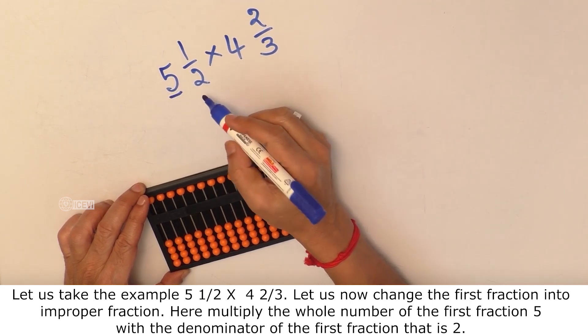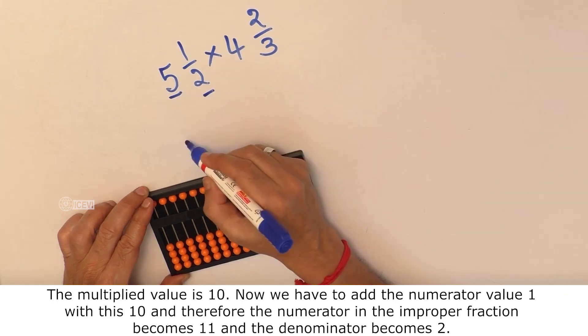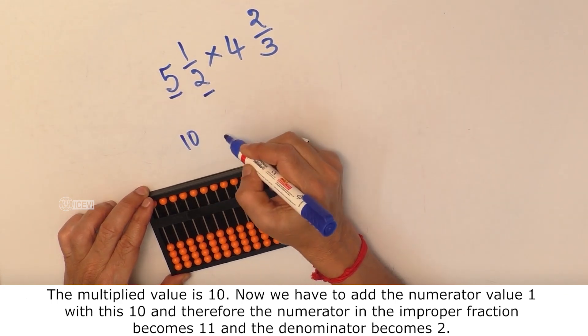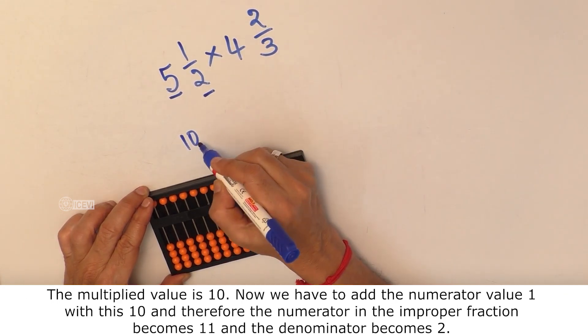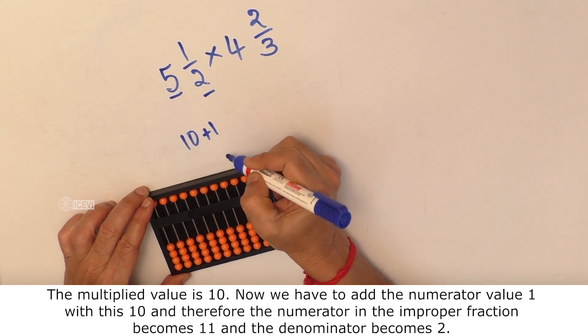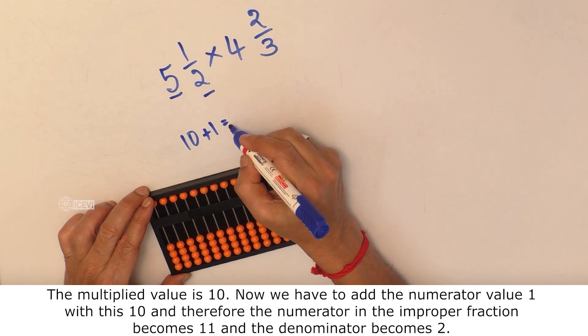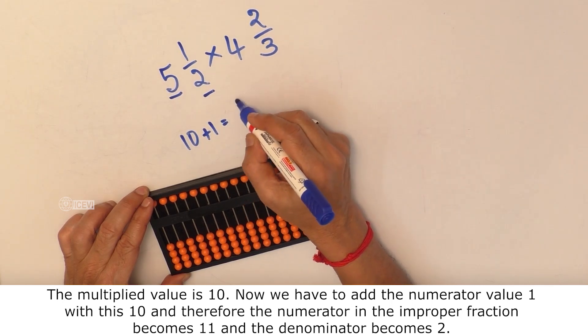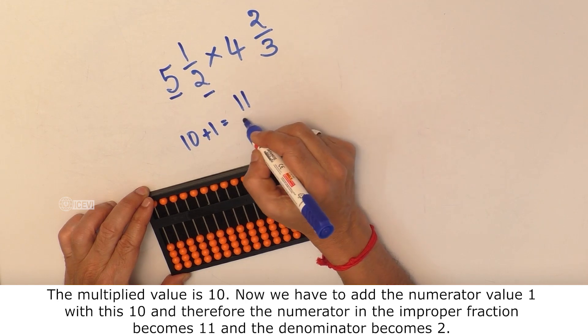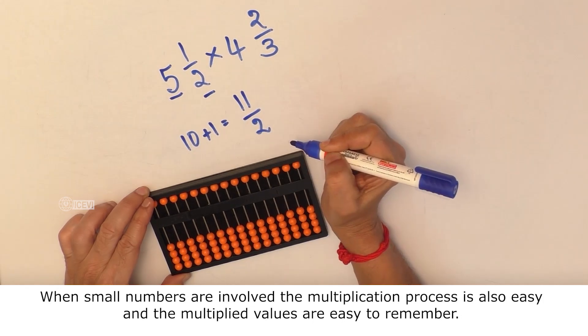Now we have to add the numerator value 1 with 10. And therefore the numerator value of the improper fraction becomes 11 and the denominator is 2. When small numbers are involved the multiplication process is also easy and the multiplied values are easy to remember.